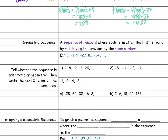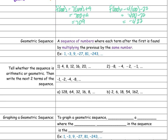A geometric sequence is a sequence of numbers where each term after the first is found by multiplying the previous by the same number. So after the first term, I'm multiplying by the same number every time. For example: negative 1 times negative 3 is negative 3; times negative 3 is positive 9; times negative 3 is negative 27; times negative 3 is positive 81.